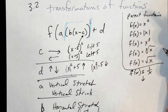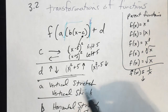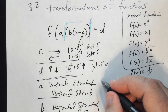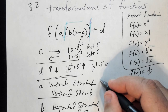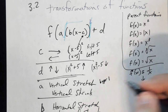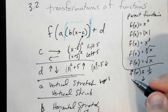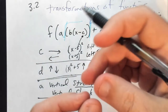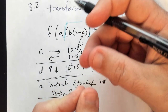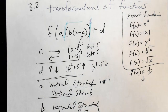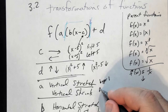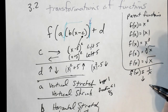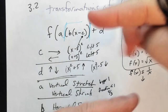The A value controls vertical stretch or shrink. If A is bigger than 1, it's a vertical stretch — it pulls the picture vertically. If A is a fraction less than 1, like two-thirds, it's a vertical shrink, which compresses the picture vertically downward.